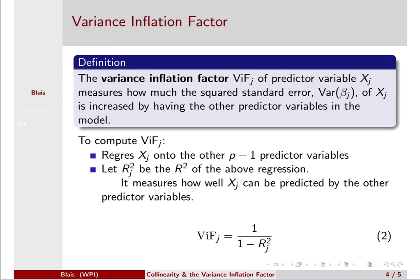Well, we can measure that, and we can measure the effect of that correlation via the variance inflation factor, or VIF. And the variance inflation factor, VIF sub j, of predictor variable Xj measured how much the squared standard error, so the variance of that beta j, when we estimate it, so the squared standard error of Xj is increased by having the other predictor variables in the model.